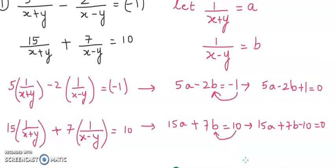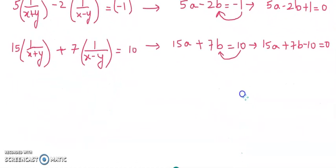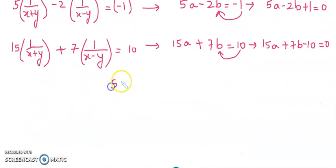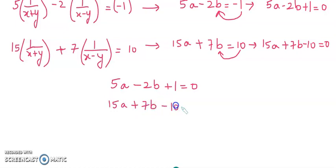Now I am going to take these two equations and apply my cross multiplication method to find a and b. So I am going to rewrite my equations: 5a minus 2b plus 1 equals to 0, and 15a plus 7b minus 10 equals to 0.